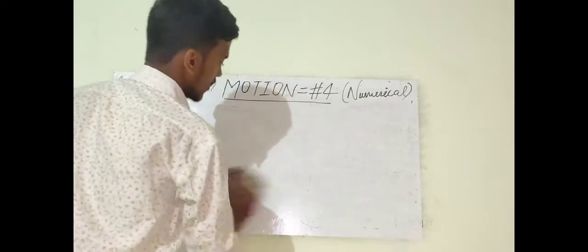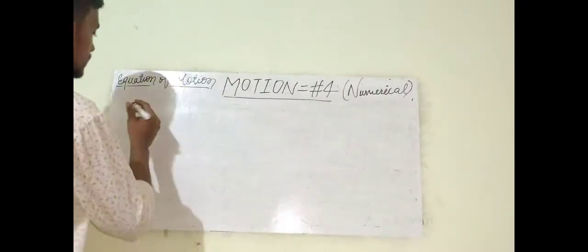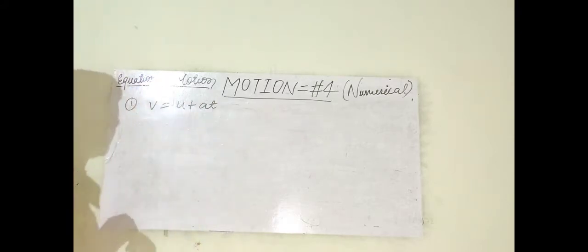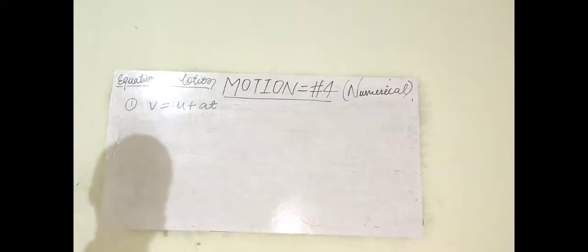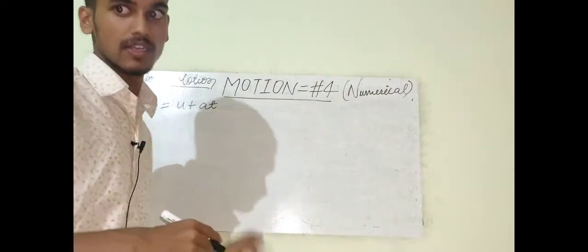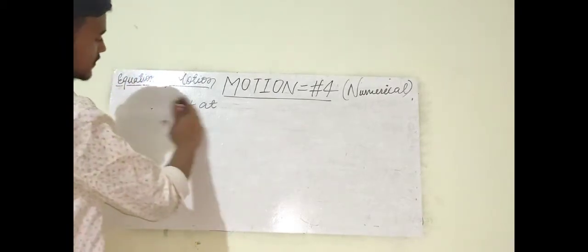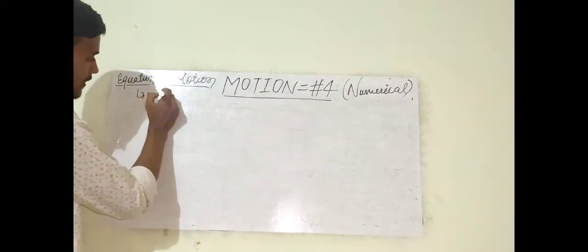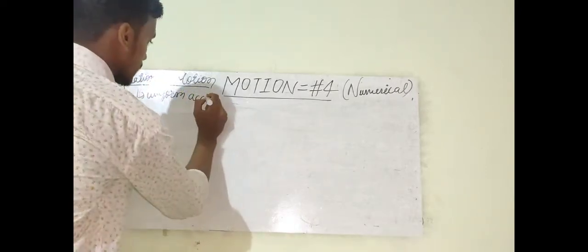Today's topic is equations of motion. Equations of motion work on uniform acceleration — they were derived for uniform acceleration. The equations tell us about initial velocity, final velocity, distance, time, and acceleration. If four of these five quantities are given, you can find the fifth one using these equations.